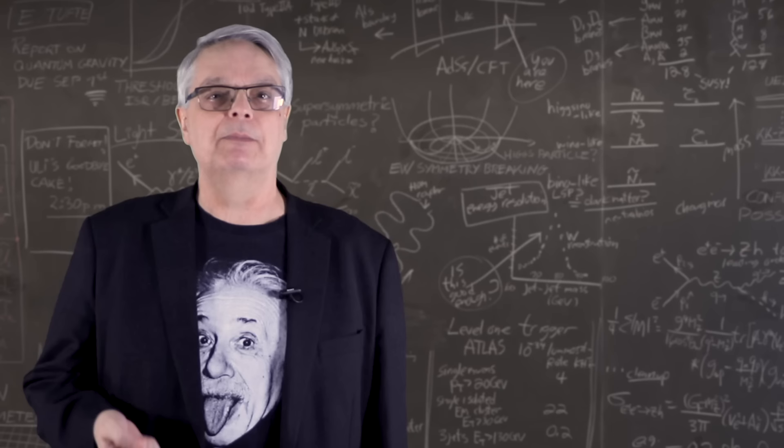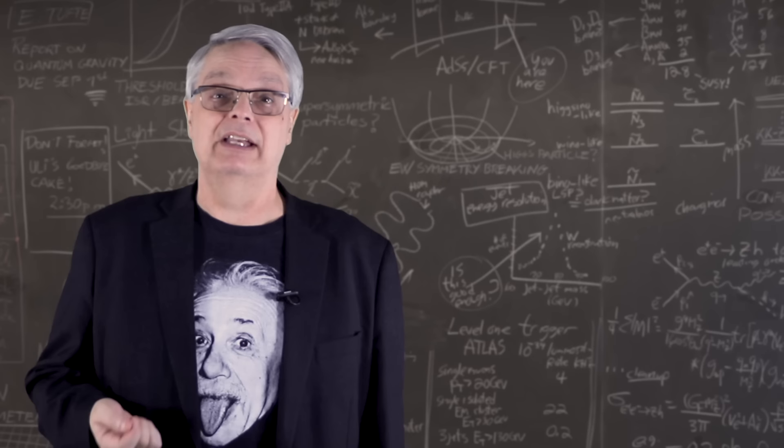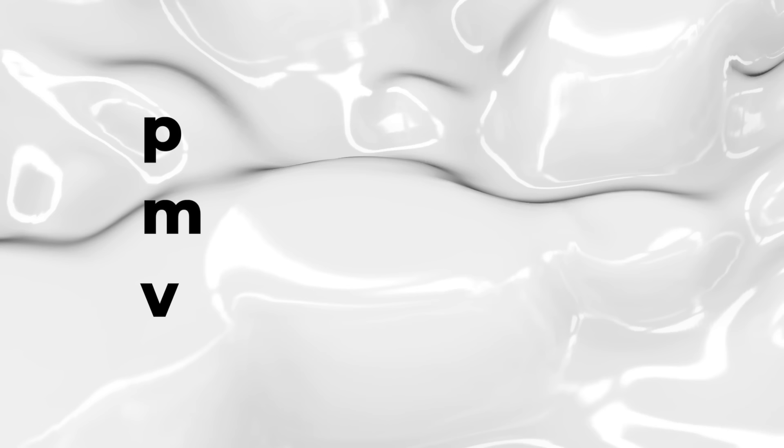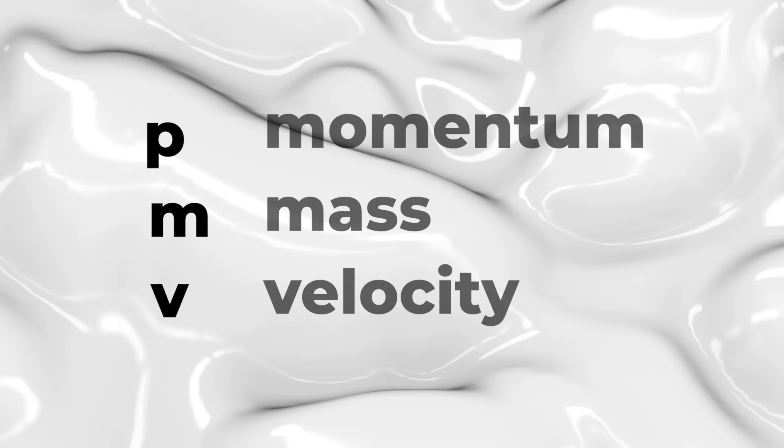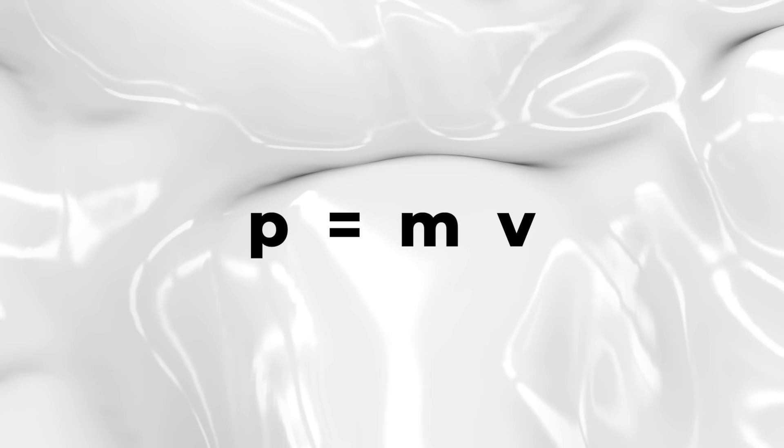Before I begin, I guess I should apologize. This video has more math in it than most. That's because people ask the question of how photons can have momentum after they learned about momentum in a physics class and learned the equation for momentum. So I have to build the explanation around that equation. This equation says that momentum, which is written as p, is equal to an object's mass, written as m, times its velocity, which is written as v. p equals mv. That's the equation.